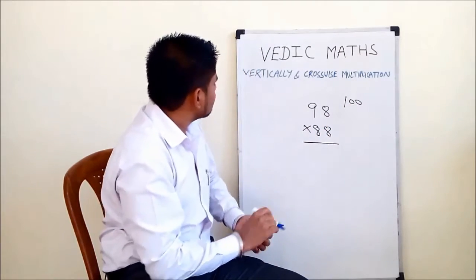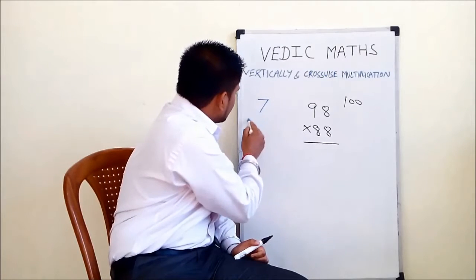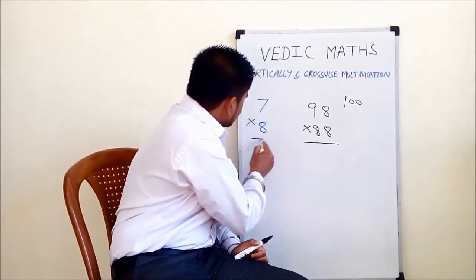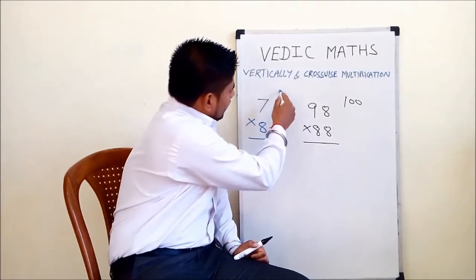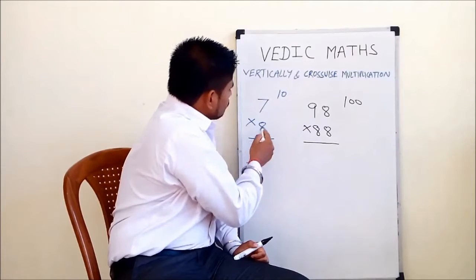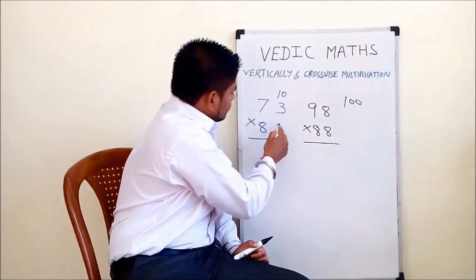To understand this concept, we take an example as 7 into 8. So 7 is close to 10 and 8 is close to 10, so we take base as 10. 7 plus 3 is 10 and 8 plus 2 is 10.